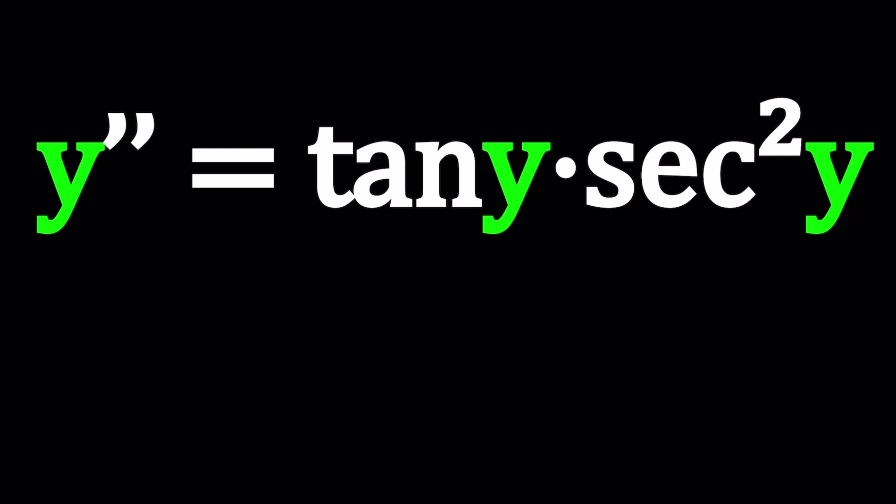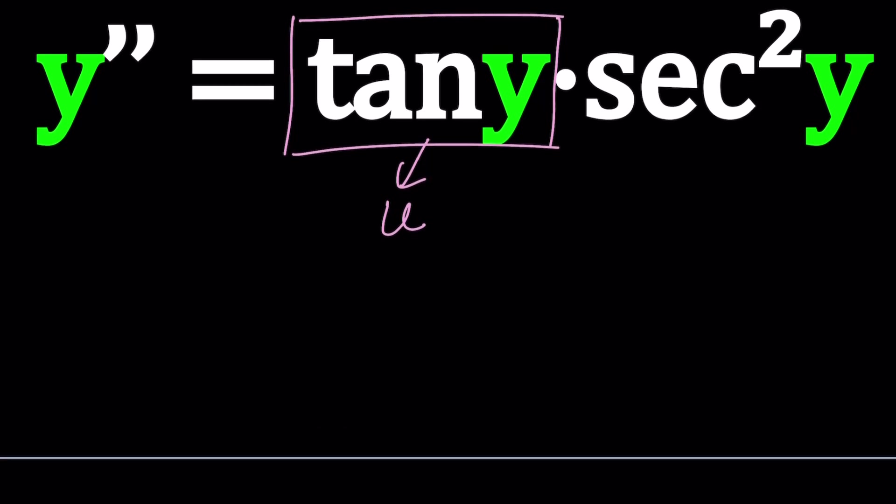But we can still use substitution. And in this case, since the derivative of tangent is secant squared, it would make sense if I call this whole thing something like u. Let's call that u. And that means u is equal to tangent y. Now you got to remember, y is a function of x. And this is a function of y. So we have a function of x on the right hand side, but we can't just directly integrate because we don't know what y is. We're trying to solve for y. So that's the problem. That's the challenge.